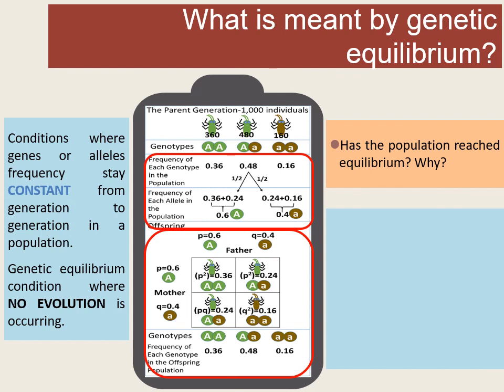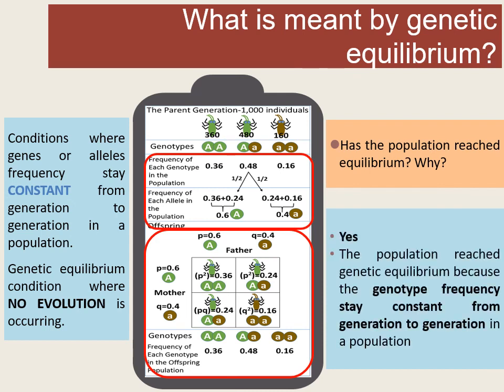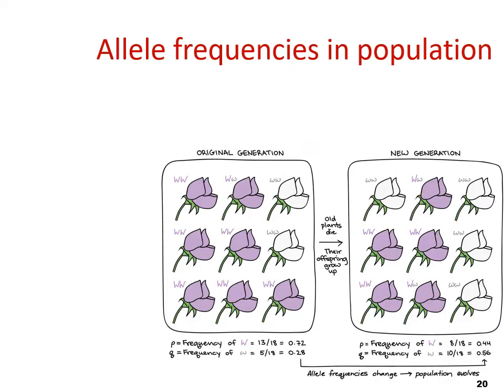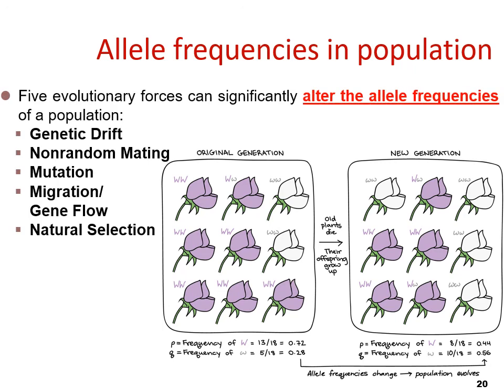When a population reaches equilibrium, it means that the genotype frequency stays constant from generation to generation in a population. Population genetics is the study of genetic composition of natural populations. It seeks to understand how this composition has been changed over time by the forces of genetic drift, non-random mating, mutation, migration, and natural selection that can alter allele frequencies.